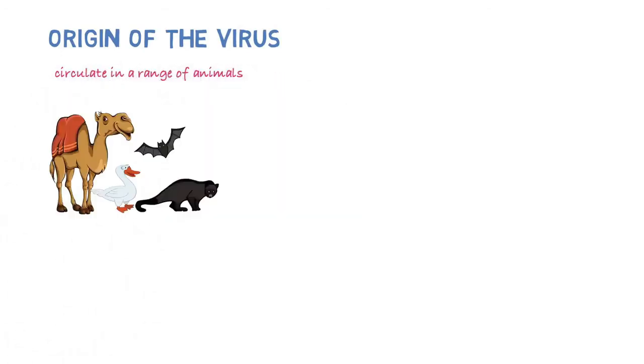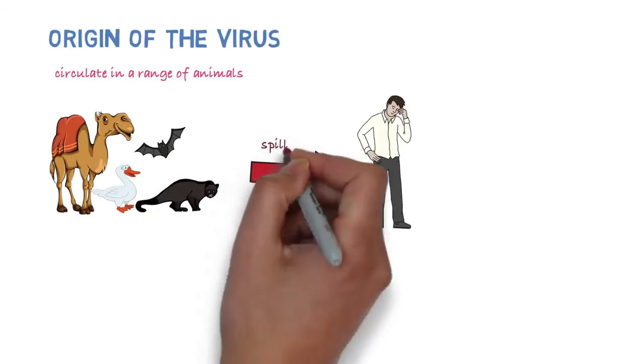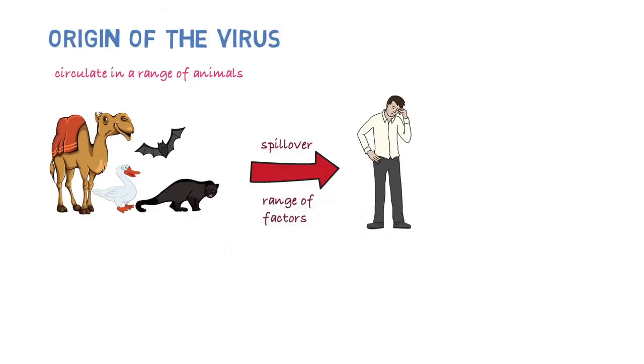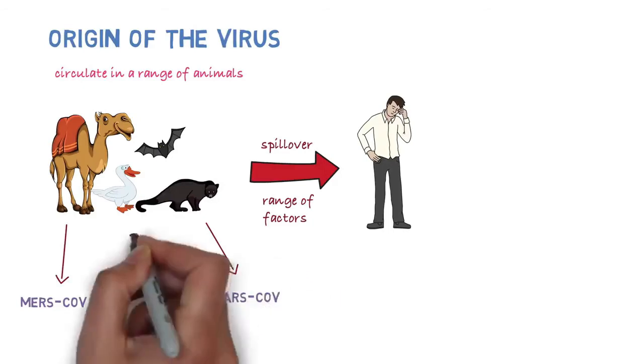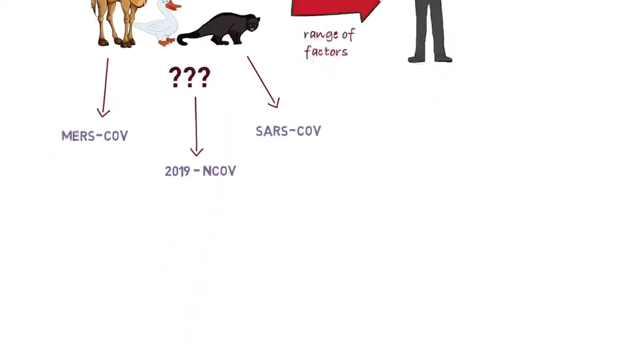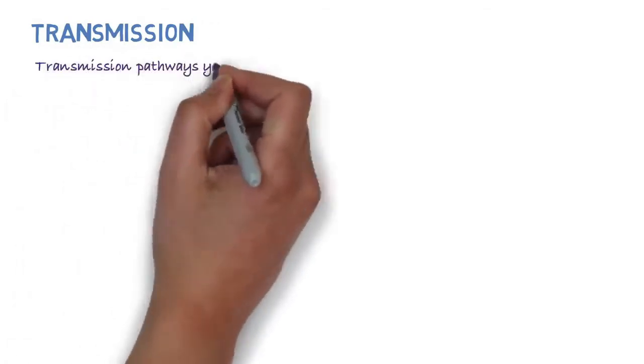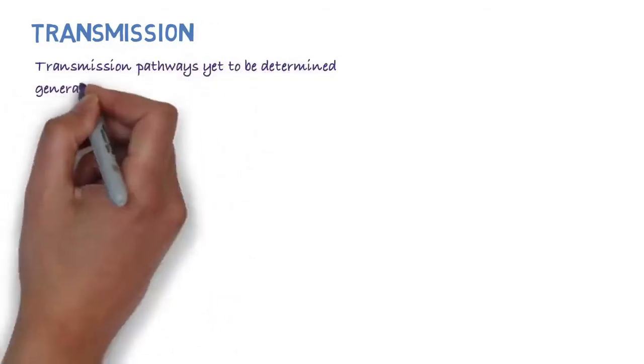So where does the virus come from? It's known that coronaviruses circulate in a range of animals. Sometimes these viruses can make the jump from animals to humans. This is called a spillover and could be due to a range of factors such as mutations in the virus or increased contact between humans and animals. For example, MERS is known to be transmitted from camels and SARS-CoV from civet cats. The animal reservoir of the 2019 novel coronavirus is not known yet.